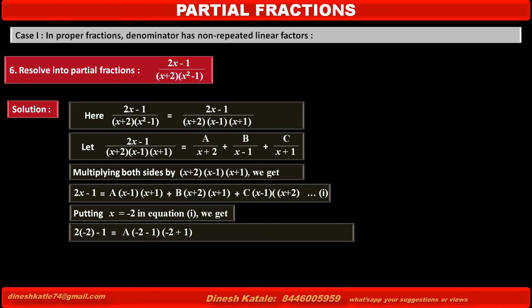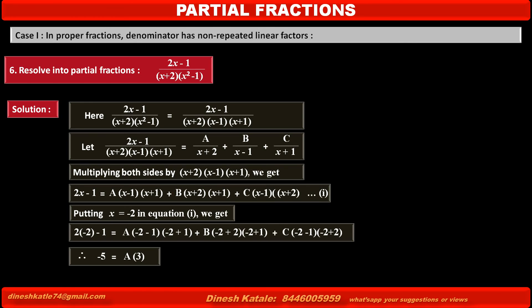On the right hand side, the first term becomes A times (minus 2 minus 1)(minus 2 plus 1). The terms containing B and C become 0 in this case, since their factors include (x plus 2) which equals zero. Solving, we get minus 5 equals A times (minus 3)(minus 1), therefore A is equal to minus 5 upon 3.